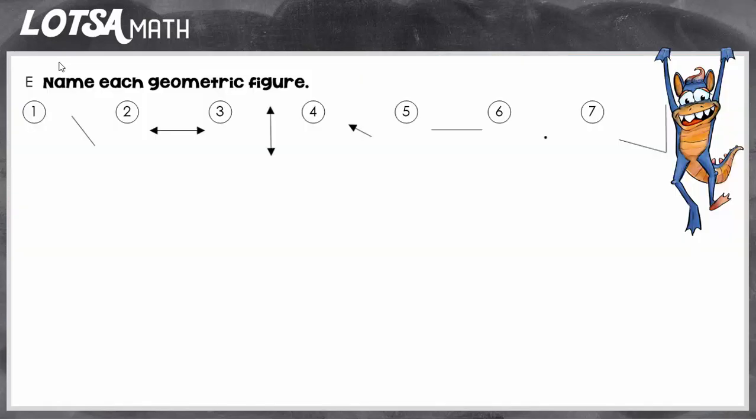Now let's do some examples together. If you look at number one, you see a line, but you also see that it doesn't go on forever in either way. So it's a line segment.